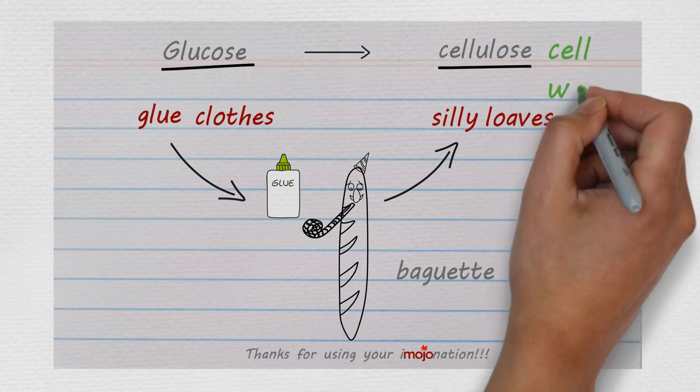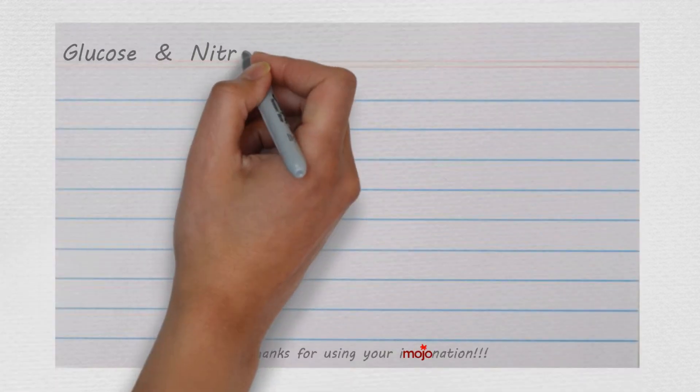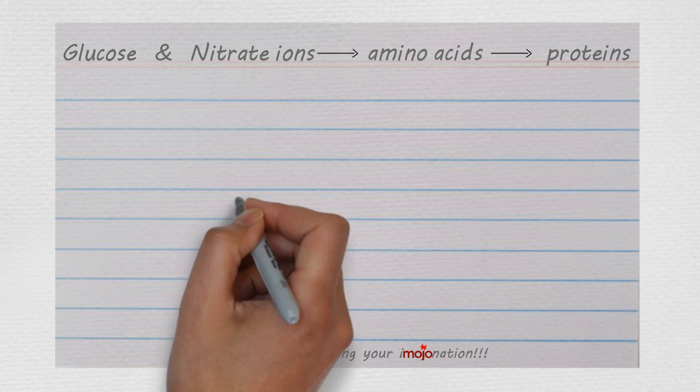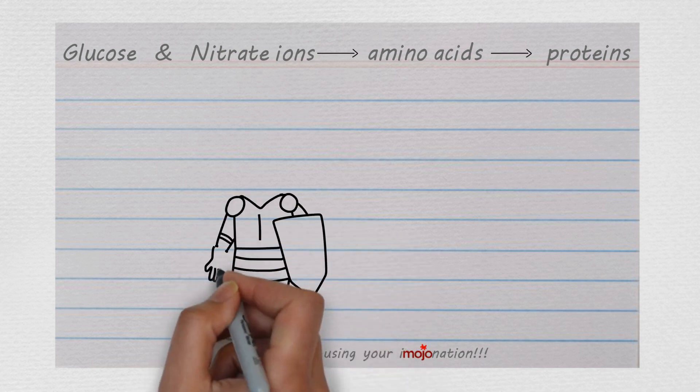Glucose and nitrate ions can be used to produce amino acids which can be synthesized to form proteins. Okay, for this one you need to think of an old knight in shining armor, helmet and all.